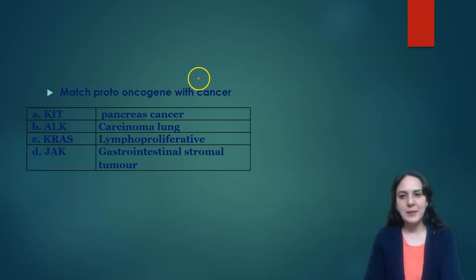Next question was: match proto-oncogene with cancers. KIT is for GI stromal tumors. ALK is for carcinoma lung. KRAS is for pancreas cancer and JAK is for lymphoproliferative cancer. So this was the correct matching.